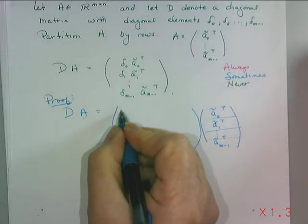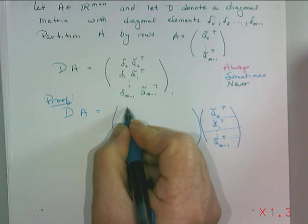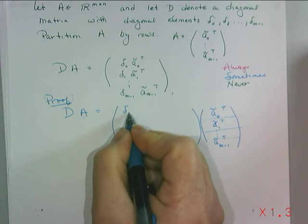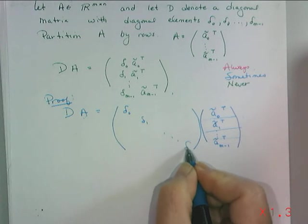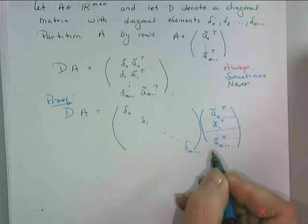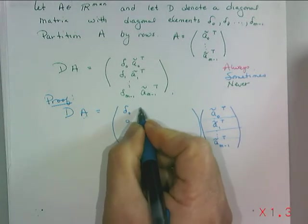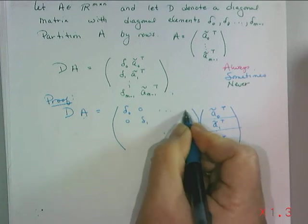So we could write the diagonal as, well the diagonal elements are delta zero, delta one, and so forth, delta M minus one, and the off diagonal elements are all zero since it's a diagonal matrix.